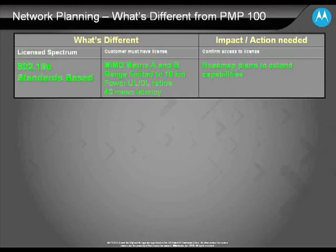This is an 802.16E-based product, so it has the features and capabilities associated with 802.16E, such as 2x2 MIMO, 40 millisecond raw trip latency, and 16 kilometer range. These are things that come along with offering a standards-based solution.